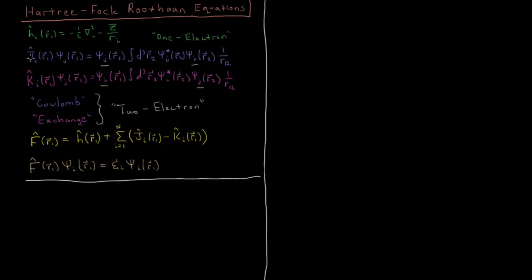We have our operators from before. We have our one-electron operator, little h, which for each electron in a given orbital i will have some kinetic energy and some attraction to the nucleus — potential energy attraction to the nucleus with a charge of Z, the number of protons being the integer Z. And we have our two-electron operators, the Coulomb and exchange operators, the Coulomb operator being the interaction of electron 1 with electron 2 in some different orbital, its charge density interacting with electron 1 through the Coulomb operator — the repulsion of those two electrons.